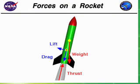Most objects have many forces acting on them at one time. All of the forces are added if they are going in the same direction and subtracted if they are going in the opposite direction. The result is called a net force. In the case of a rocket, it will go up if the thrust force is greater than the weight force. The net force will be in an upward direction.